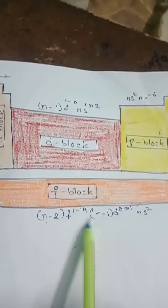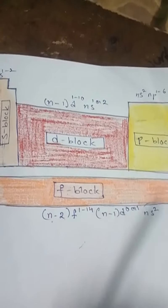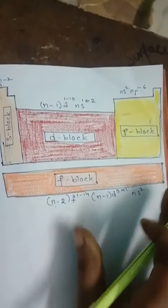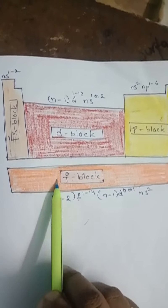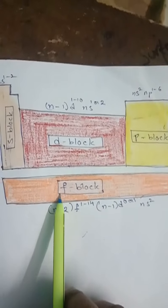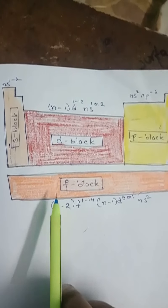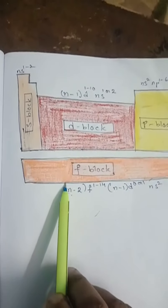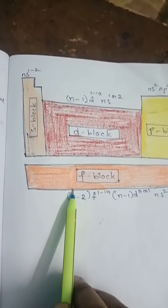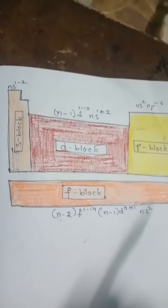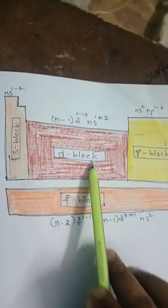F block elements are arranged at the bottom of the periodic table. Lanthanides are called rare earth metals and actinides are synthetic or man-made. These elements are hard metals with high melting and boiling points. Their common oxidation state is +3. Their ions exhibit color and are paramagnetic in nature. These elements form alloys, interstitial compounds, and complex compounds.